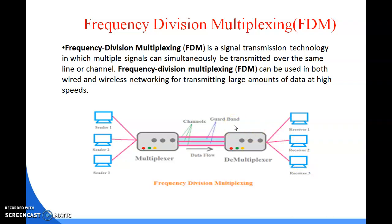The advantage of FDM is that you can send more than one signal over a single channel. The total bandwidth of a communication medium is divided into a series of non-overlapping frequency bands. Non-overlapping is important because when signals overlap, data is lost and communication performance degrades.